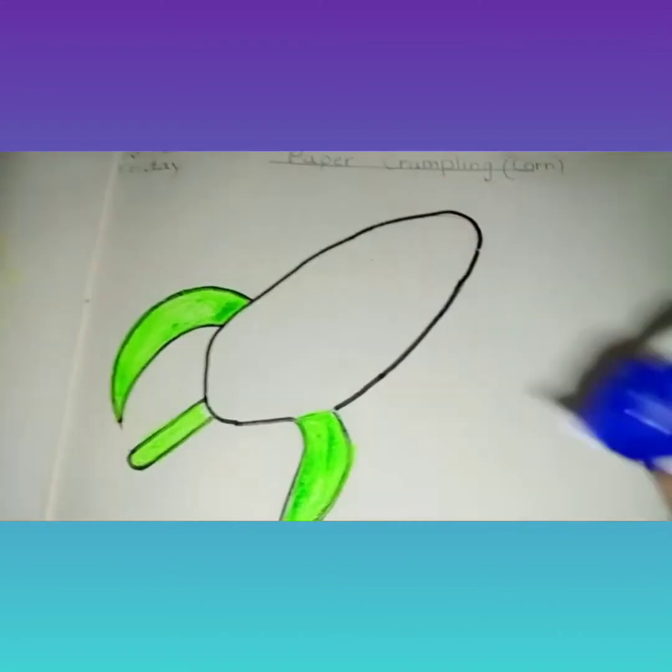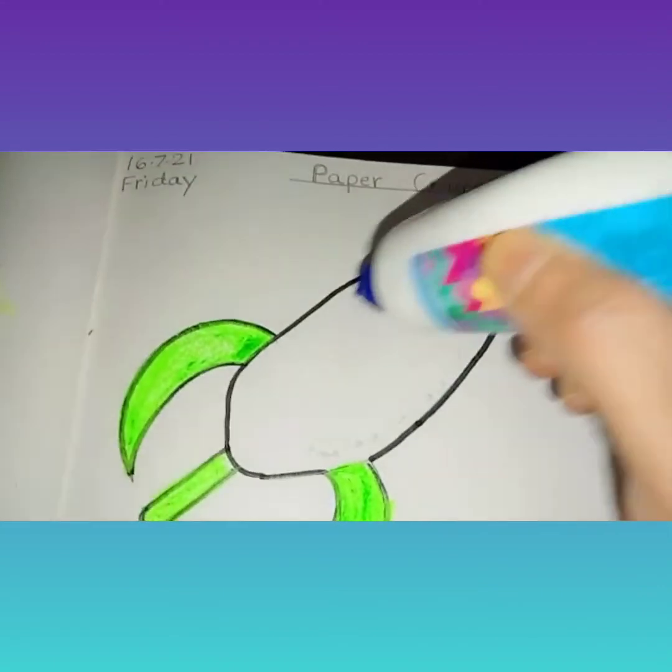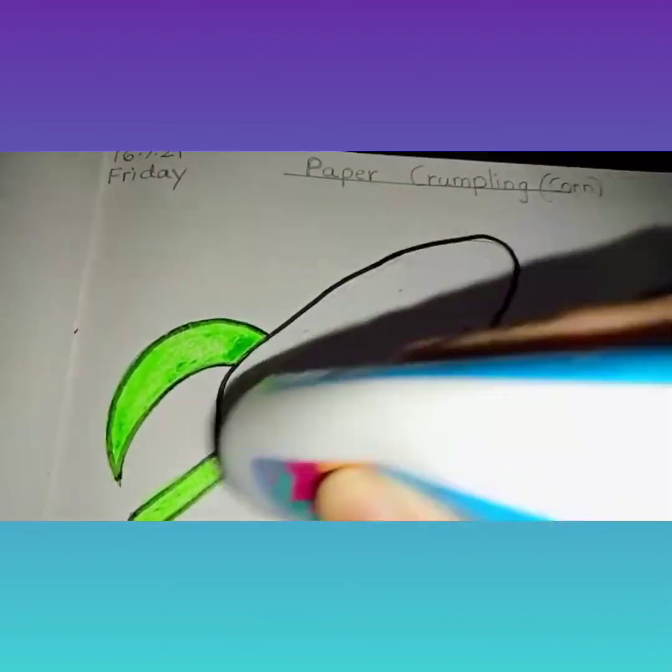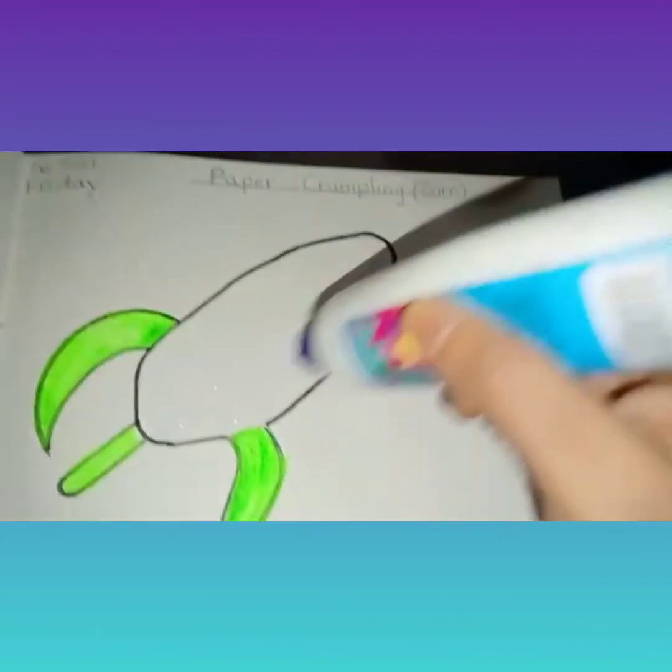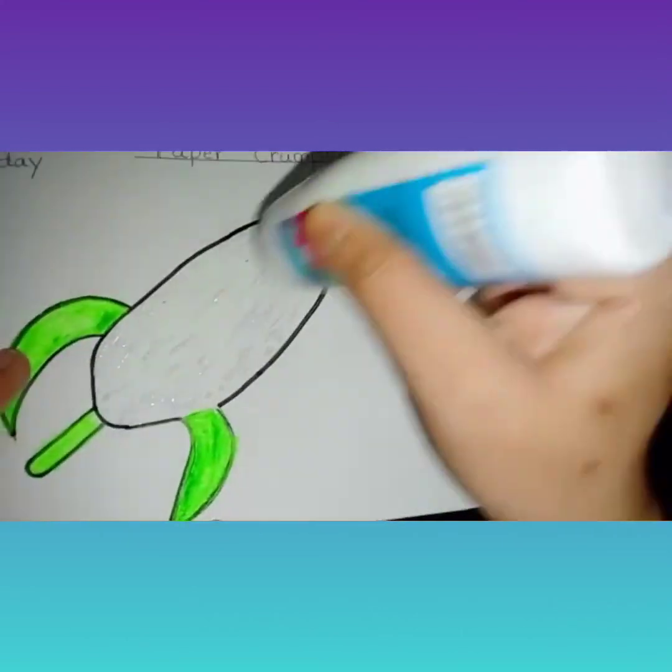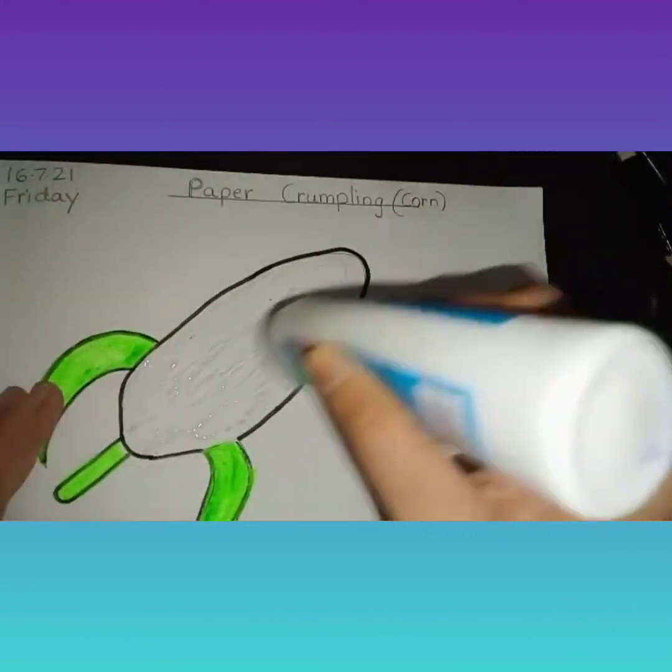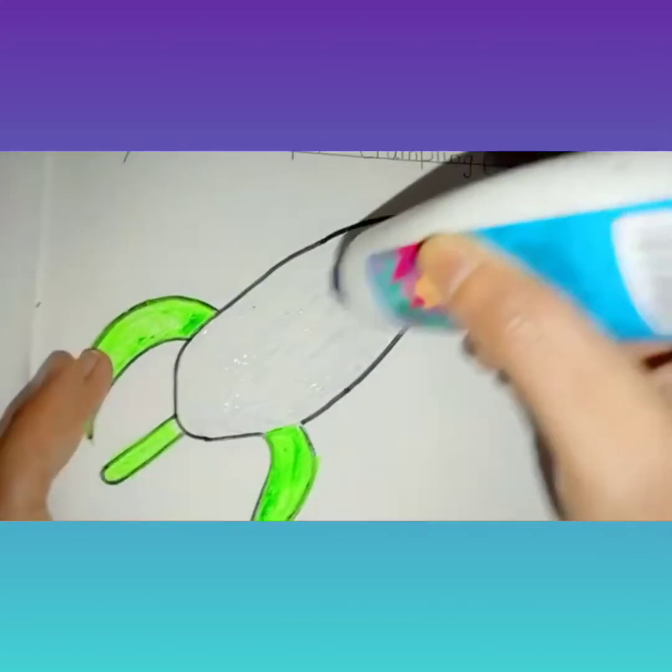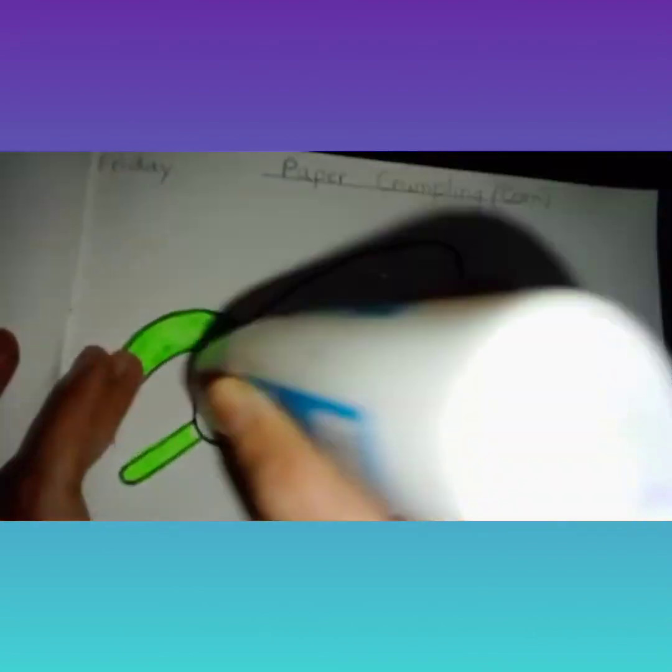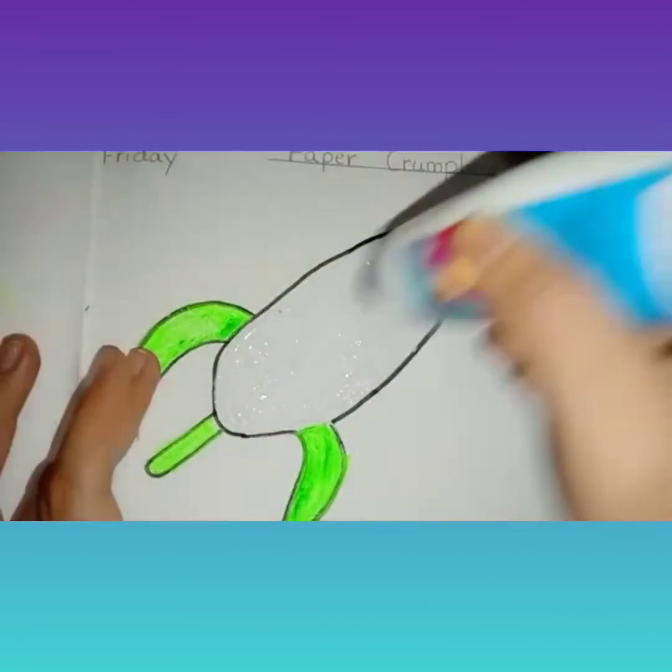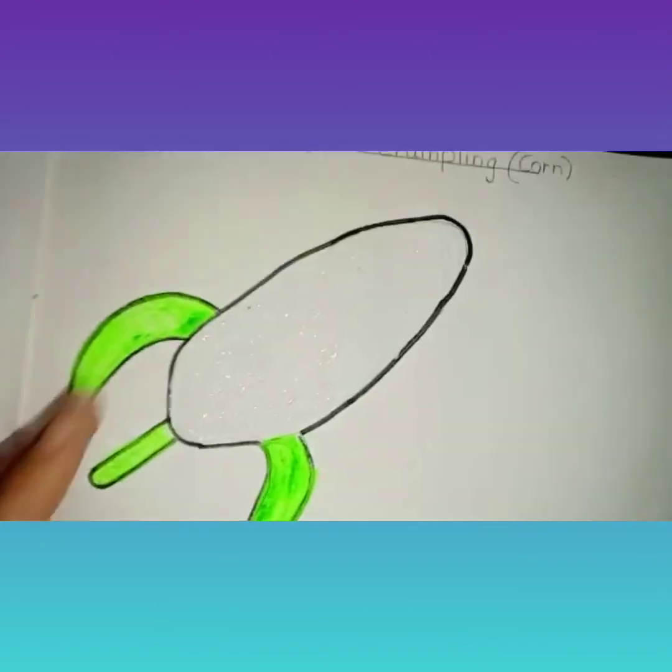So now we will apply fevicol on this area. Now you will take fevicol and spread it on this nicely, or you can put dots and spread. Like this you will take fevicol and spread it nicely. Remember children, you have to make the paper crumples yourself. It will improve your fine muscles.